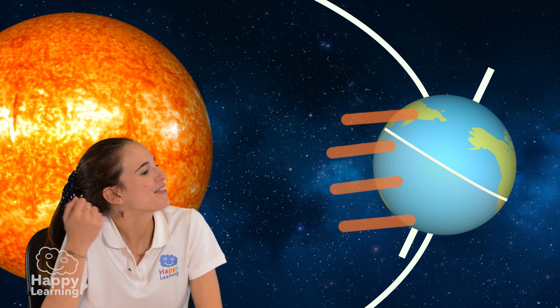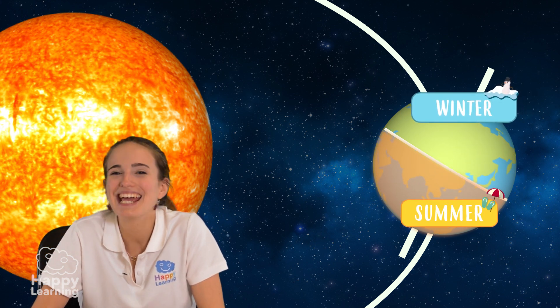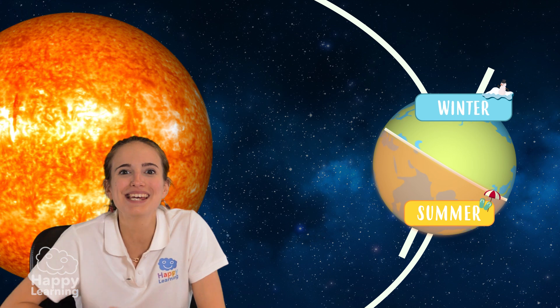Well, this means that the southern hemisphere will receive more sun rays, meaning that in the northern hemisphere it's winter and in the southern hemisphere it's summer. It's easy peasy, huh?